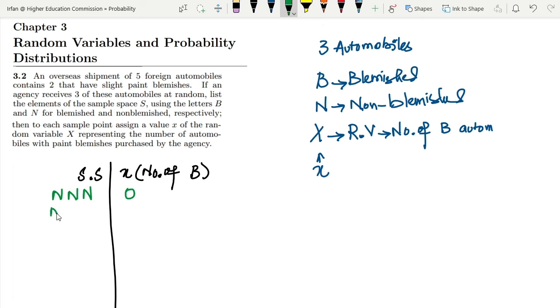Similarly, NNB - here we have only one B, so we can write here one because the number of blemished here is one. Similarly, NBN - here again one.